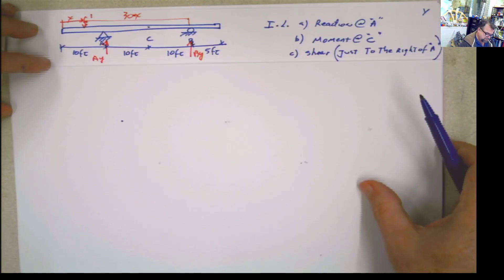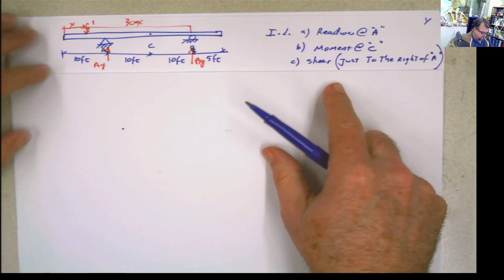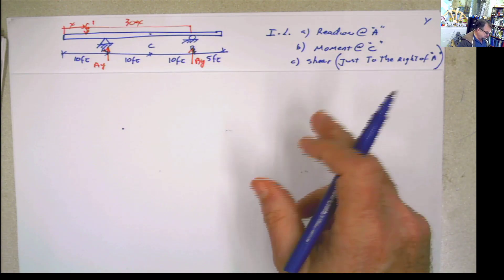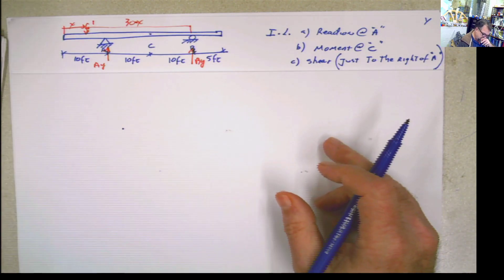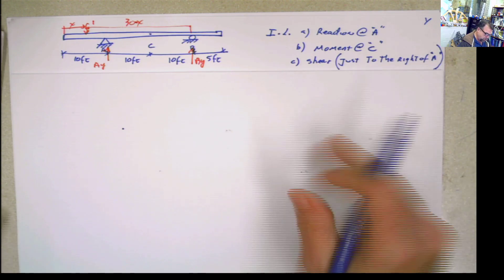Hi again. This is the last part of this problem here. The last part of the problem is asking you to do the shear just to the right of the support A.